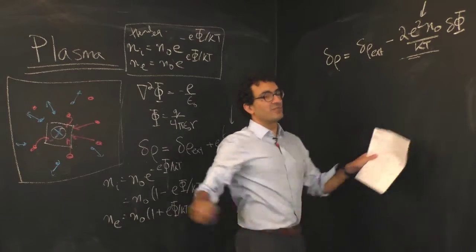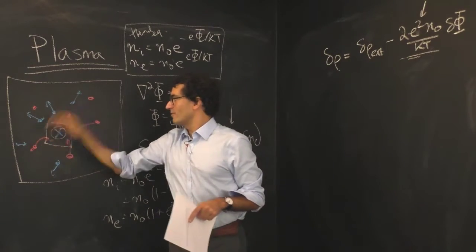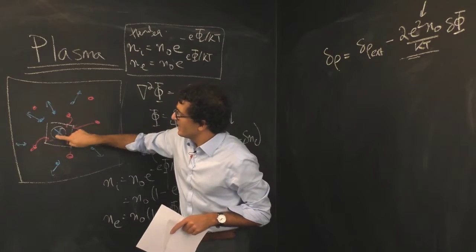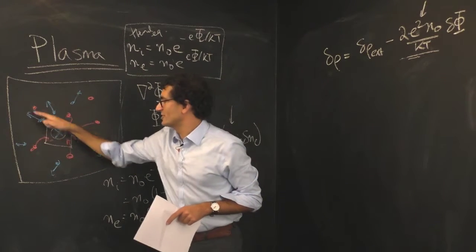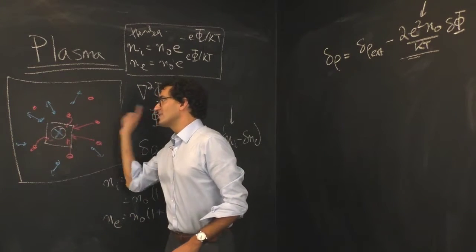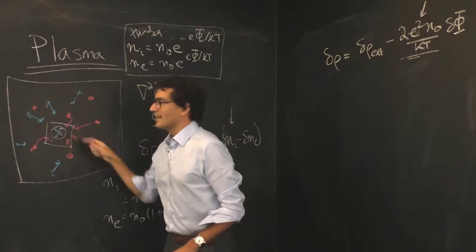You can think about it this way: if these particles are moving around at a very high temperature, yes this here might bring some in and push some away, but these already have so high of an energy that the over-density they produce is not as high.